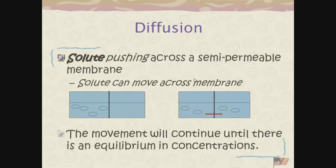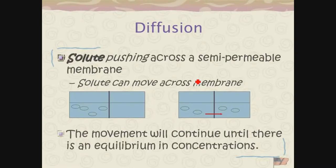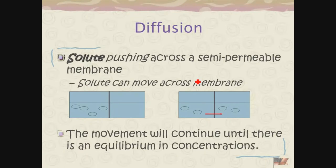Here's diffusion, where a solute is moving across a semipermeable membrane until they're balanced on either side — in equilibrium, with equal amounts of solute on both sides. That's passive diffusion through a semipermeable membrane when it's in solution. Over time, if left on its own with a semipermeable membrane separating two chambers, the number of particles on each side will eventually be the same.